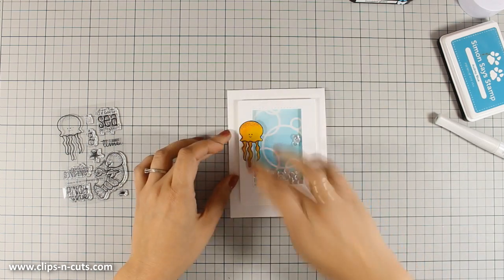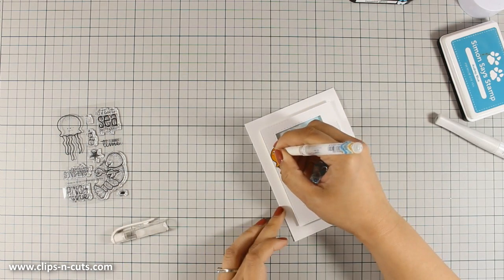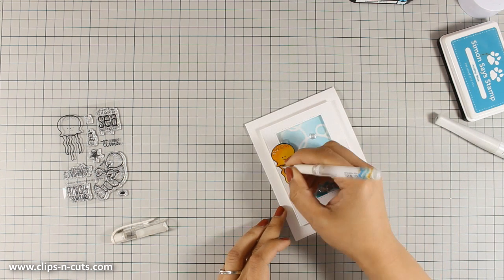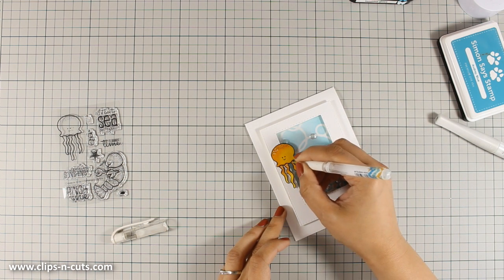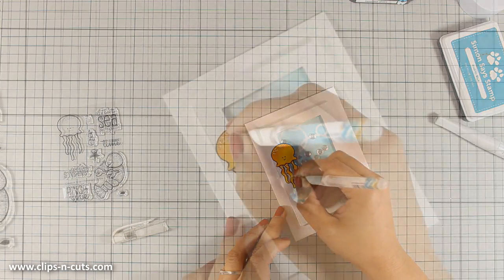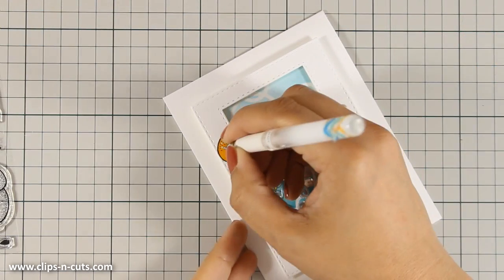Just to add a bit of highlight and some more interest on the jellyfish, I am using my gel white pen to add some dots on both the tentacles and the main body of the jellyfish.